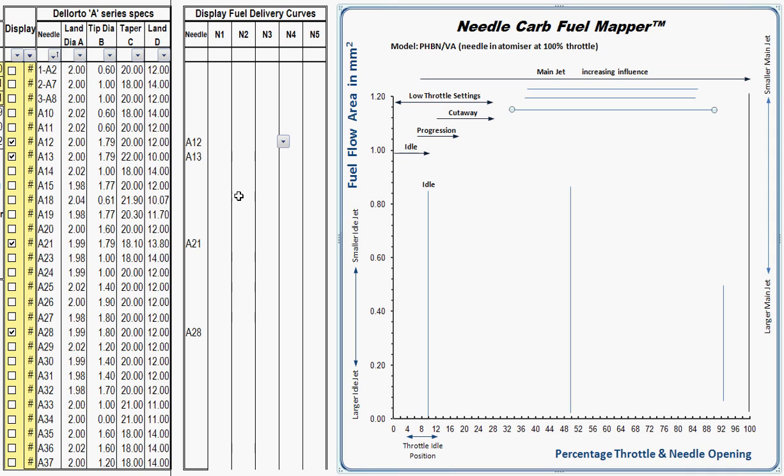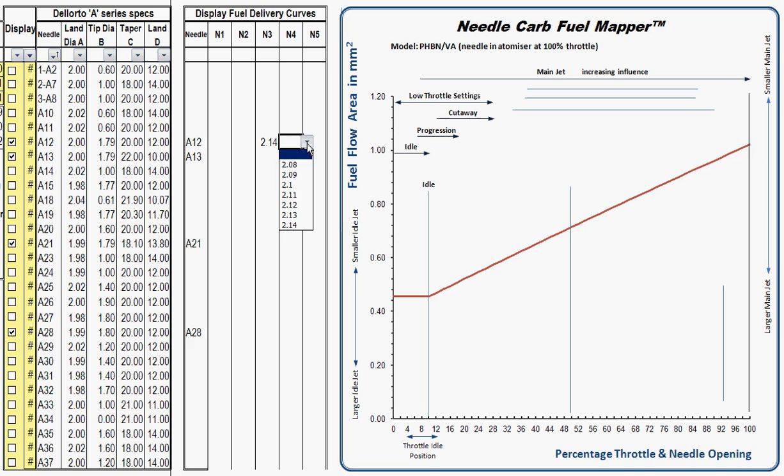We're looking at using four needles from the typical pack that you can buy that are readily available and inexpensive. We're going to look at simple tuning first. There are carbs out there where you don't really have a great deal of tuning options, and you get your bike close and that's it. You can obviously do that with the PHBN. Let's take for example a good needle to tune on, which is the A12, and we're going to show how the fuel is delivered graphically here.